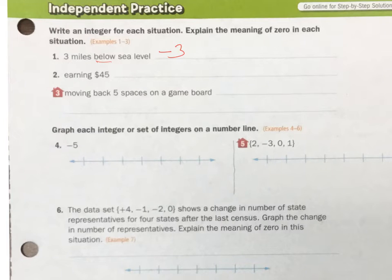Earning $45. Earning is a plus 45. And the 0 equals gaining nothing or spending nothing. 0 is nothing.